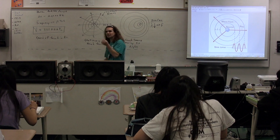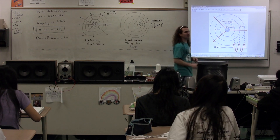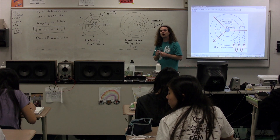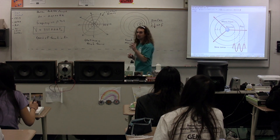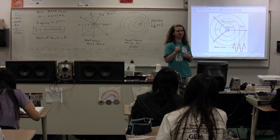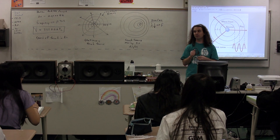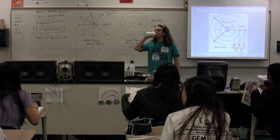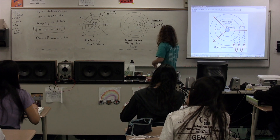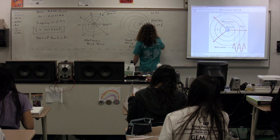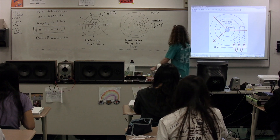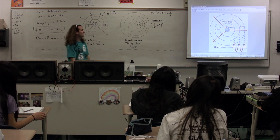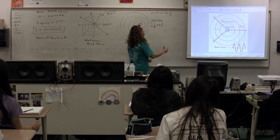Now, I want to talk about frequency — that is what we hear. How are frequency and wavelength related? The speed of sound is equal to the frequency times the wavelength, which means the frequency is equal to the velocity divided by the wavelength. So frequency and wavelength are inversely related. Which means if the wavelength goes down, what happens to the frequency? It goes up.